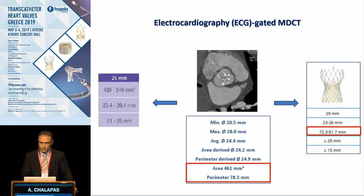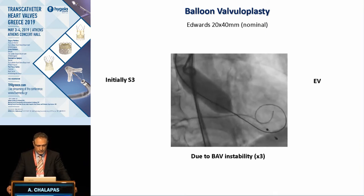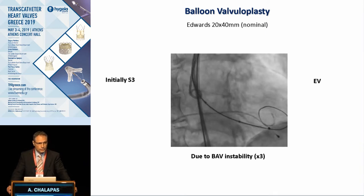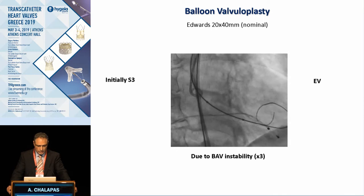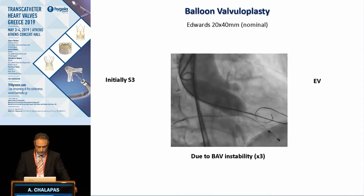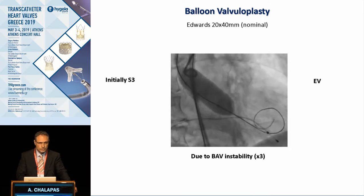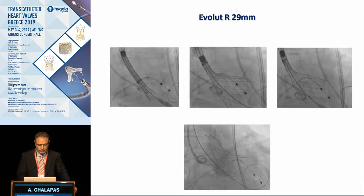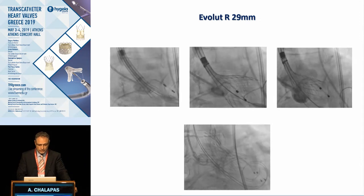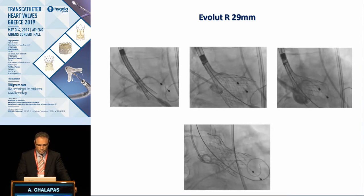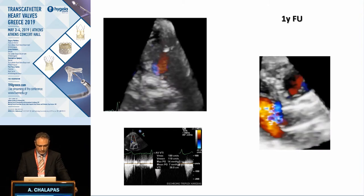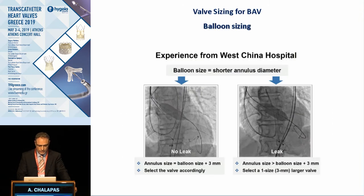Here is an example of a type 1 left-to-right fusion bicuspid valve with raphe calcification and no ascending aorta dilatation. Based on the anatomical information, we had to choose between Evolute 29 mm or Sapien 3 26 mm. We initially planned to use the Sapien valve, but during valvuloplasty we observed great instability of the 20 mm balloon, corresponding to smaller annulus dimensions. Based on that finding, we changed our strategy and ultimately used the Evolute 29 mm, achieving an excellent hemodynamic result with mild paravalvular leakage.